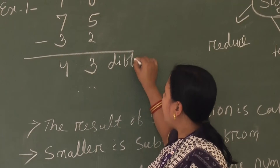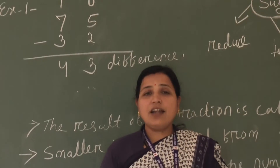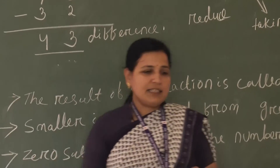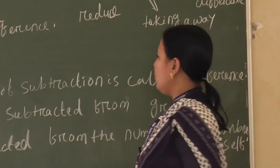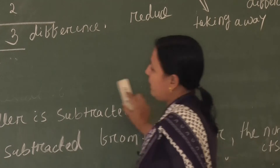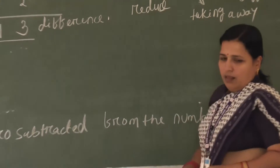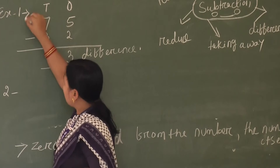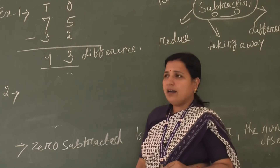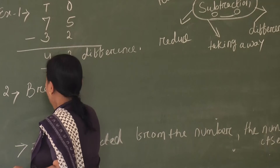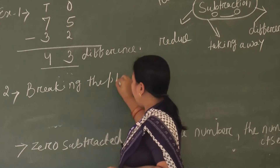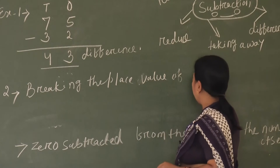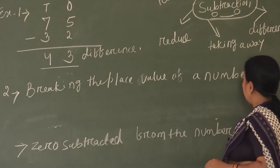43 is the difference — the result of subtraction is called difference. Example number 2: you subtract the number by breaking the place value. You break the place value of the number and subtract. This answer should also be equal to the first one. So, let's do 75 minus 32 by breaking the place value.